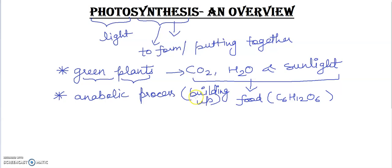Photosynthesis can be described as the single most important natural process which occurs in plants. About 90% of oxygen is produced by green plants, and green plants are solely responsible for the release of oxygen into the atmosphere.